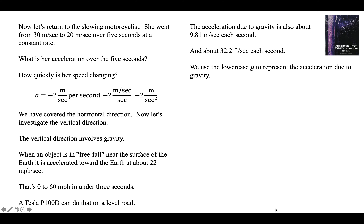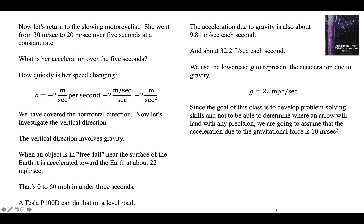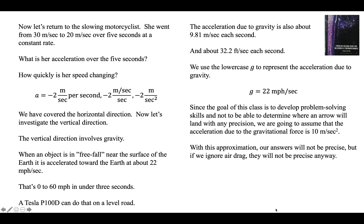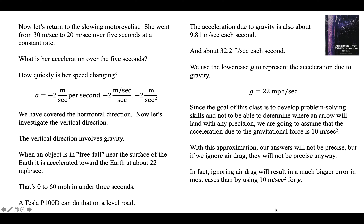Since the goal of this class is to develop problem-solving skills and not to determine where an arrow will land with precision — you'd have to include air drag for that — we are going to assume that the acceleration due to gravity is 10 meters per second each second. With this approximation our answers will not be precise, but if we ignore air drag they're going to be wrong anyway. Ignoring air drag results in a much, much bigger error in most cases. Even with a javelin, a baseball, or a golf ball, the air is crucial. So we're going to use 10 meters per second squared for g.